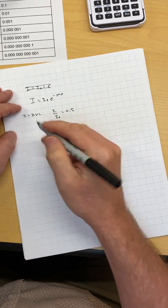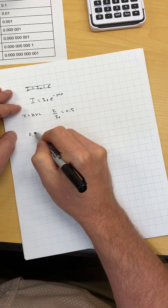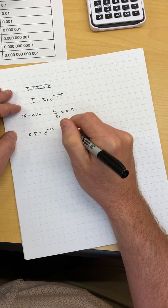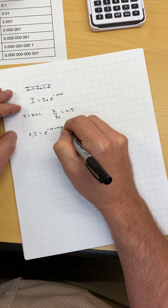So I can take these two things and plug them in. 0.5 is equal to e to the minus mu half value layer times half value layer HVL.